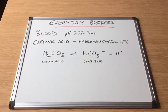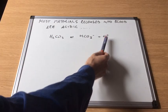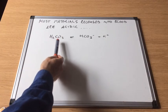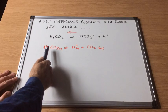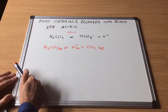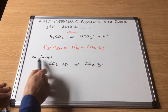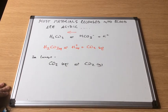Most materials released into the blood are acidic, increasing H⁺ concentration and shifting the equilibrium left, which increases carbonic acid levels. If left unchecked this would cause problems. An enzyme converts the extra carbonic acid into aqueous carbon dioxide, which is transported to the lungs, where it is converted to gaseous carbon dioxide and breathed out.